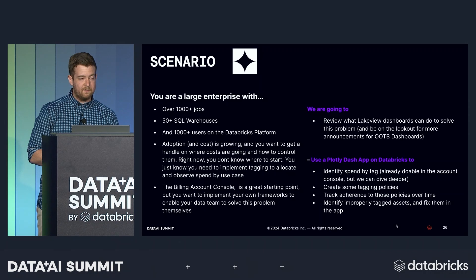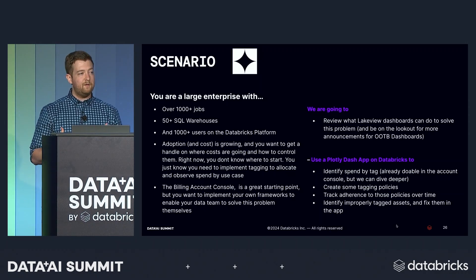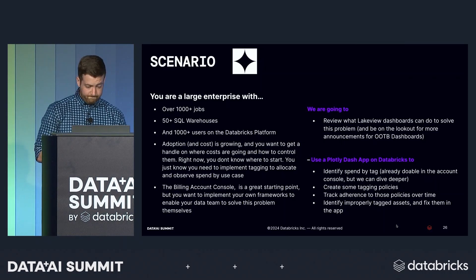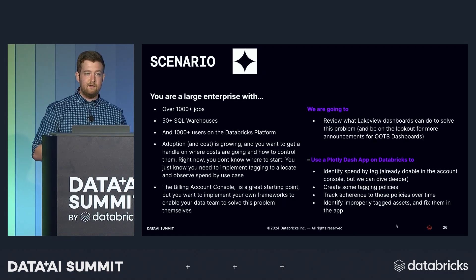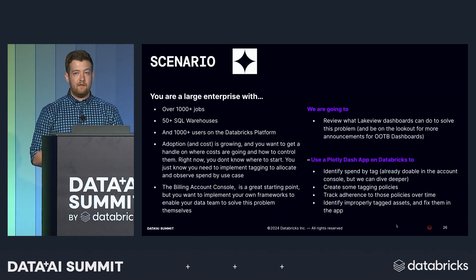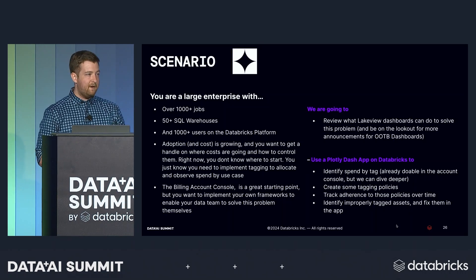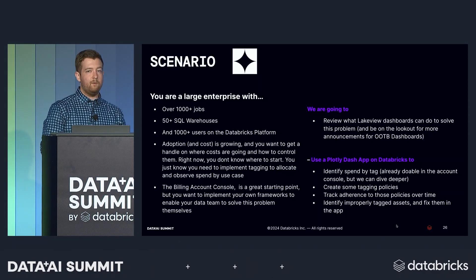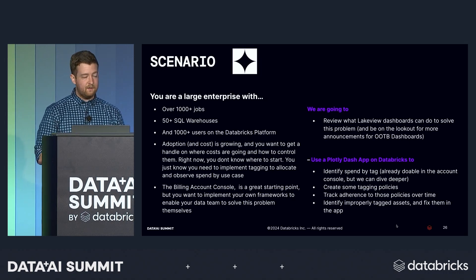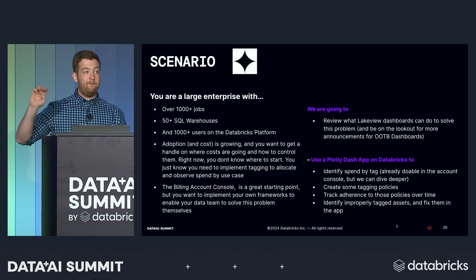We'll use Plotly Dash apps on Databricks to identify usage that is maybe not properly tagged. Most companies use some sort of enterprise tagging framework to know where jobs, clusters, and users are running. In the app, we're going to solve the problem of ghost usage that isn't tagged — create tagging policies, update the analytics, and figure out how to increase adherence to our tagging policies. The other use case is LLM-generated alerts. As an ops person who isn't very technical, we'll walk through how to use an LLM app using DBRX and Databricks to query the data, automatically generate the SQL and API code to create the alert, and ultimately create that alert with no code.